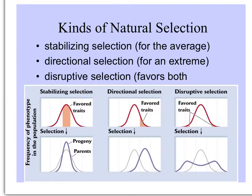There are three main kinds of natural selection: stabilizing, directional, and disruptive.